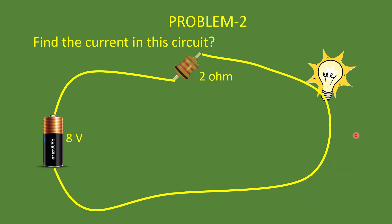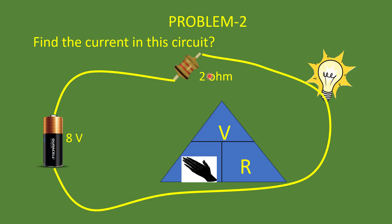Let's look at one more problem: find the current in this circuit. An 8-volt battery is connected to a lamp with 2-ohm resistance. Using Ohm's law, current I equals V divided by R. Substituting the values: voltage is 8 volts, resistance is 2 ohms, so current equals 8 divided by 2, which is 4 amperes.